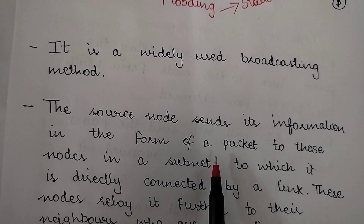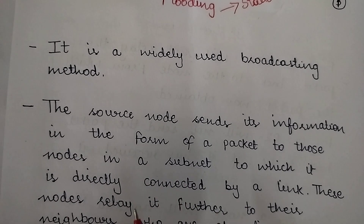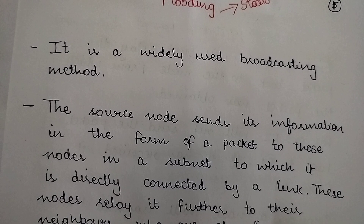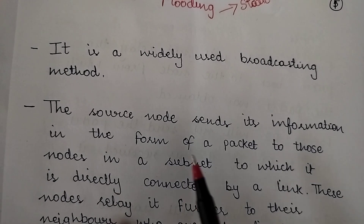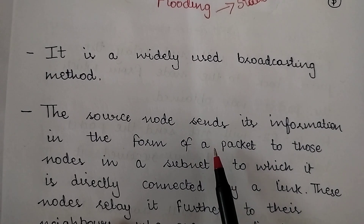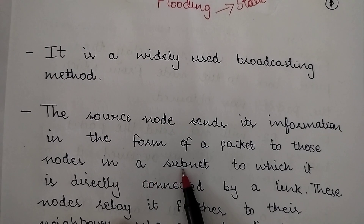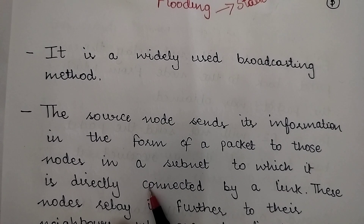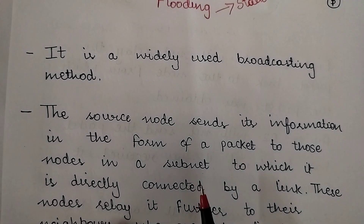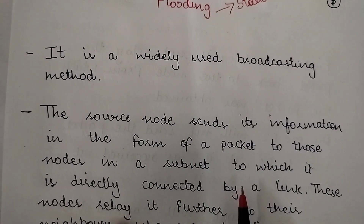In this routing algorithm, the source node sends its information in the form of a packet to those nodes in a subnet to which it is directly connected by a link. We visualize the subnet as a graph wherein routers are represented by nodes and transmission lines are represented by edges connecting those nodes.